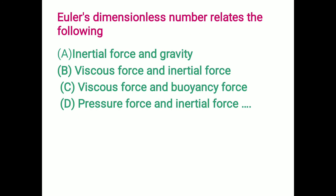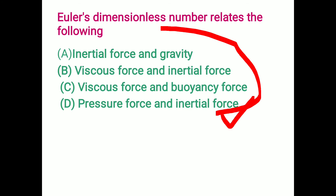Euler's dimensionless number is relative to which force ratio? We have Euler's number, Mach number, Froude number, and Weber number. According to Euler, it is pressure force to inertia force. Viscous force to inertia force equals Reynolds number; inertia force to gravity force is Froude number. So option D is the correct answer for Euler's number.